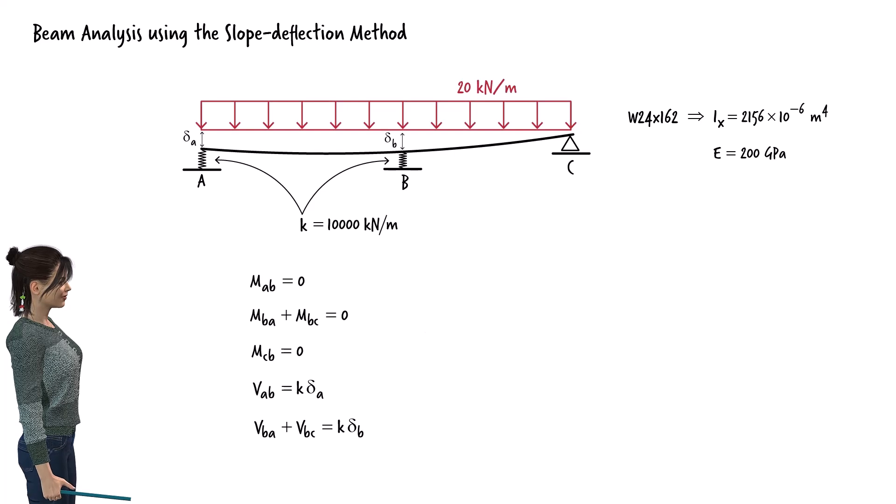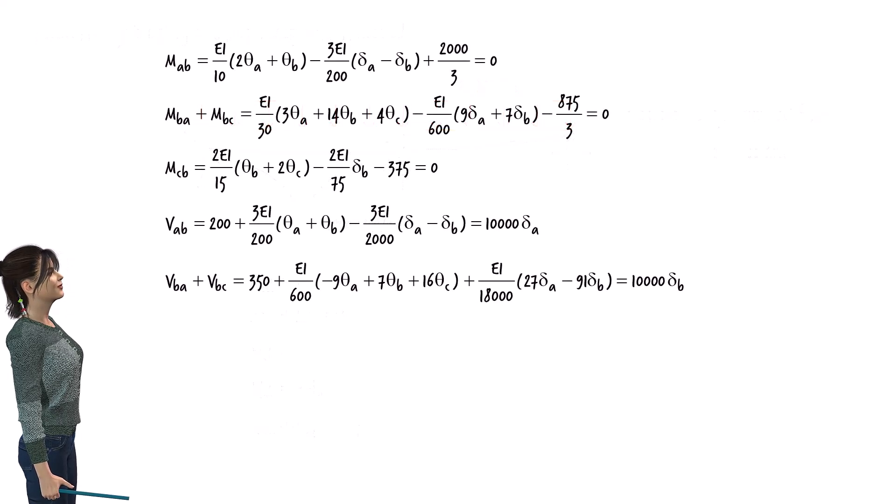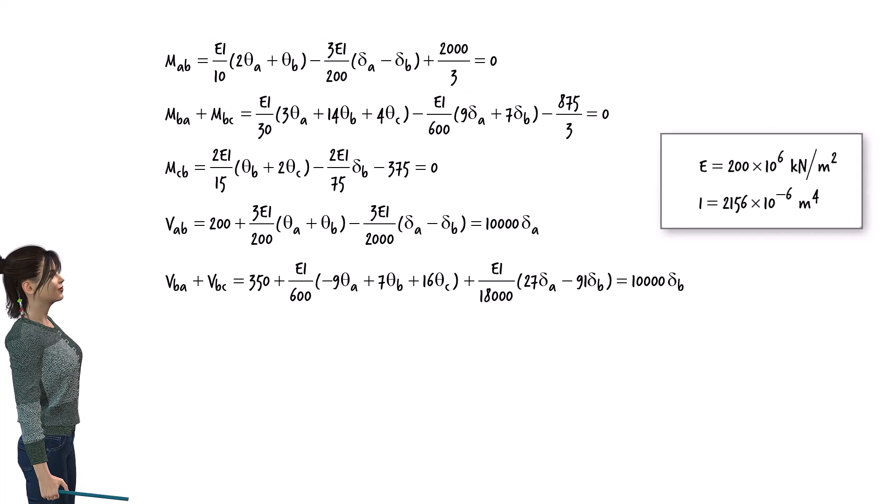We can express the equilibrium equations in terms of the unknown rotations and displacements using the member-end shear force and moment equations. The expanded equations are. Since we know the modulus of elasticity of the material and the moment of inertia of the beam's cross-section, we can solve these equations for the unknown joint rotations and displacements using any standard method, such as Gaussian elimination.